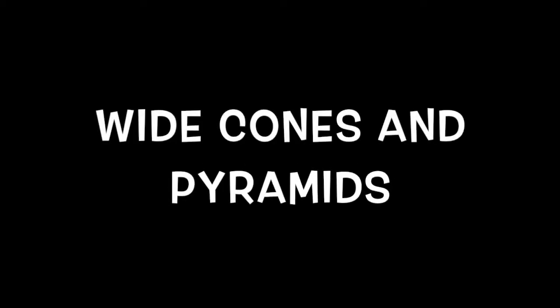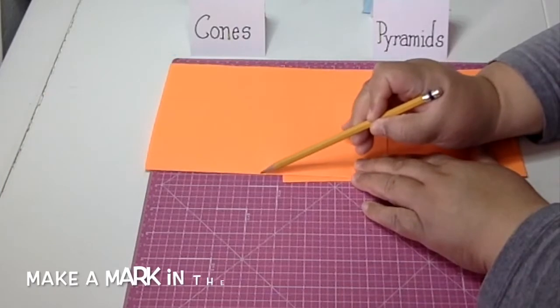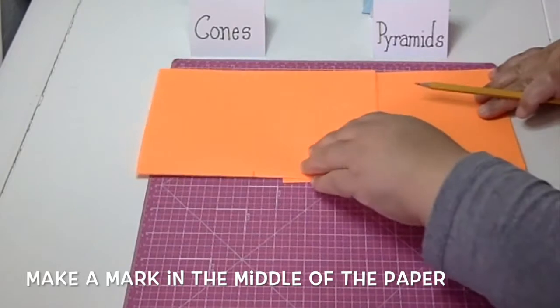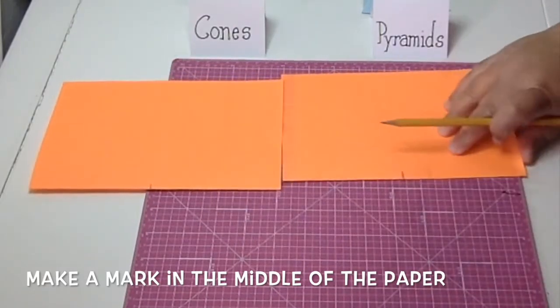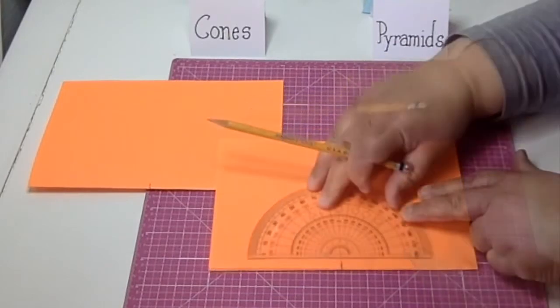So for wide cones, it's a little bit different. Instead of using the edge of the piece of paper, I'm going to make a mark where the fold is, just going to make a mark somewhere in the middle of the page. And then I'm going to use that mark as a reference point where I'll set my protractor crosshairs on.